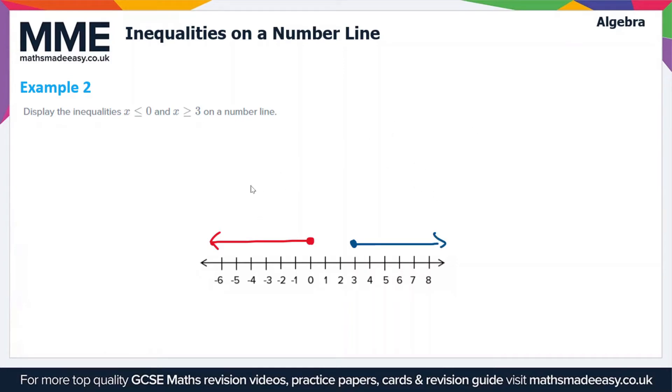We can label them as well, so x ≤ 0 and x ≥ 3. Oops, that should be a 3 not a 0. There, so these are our two inequalities.